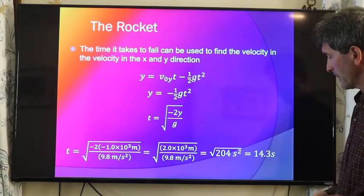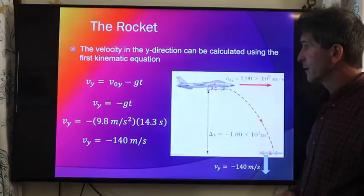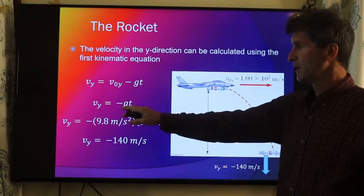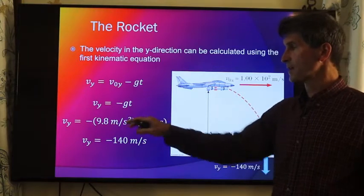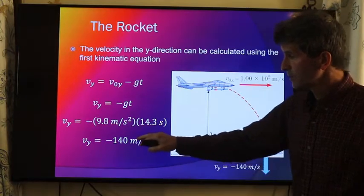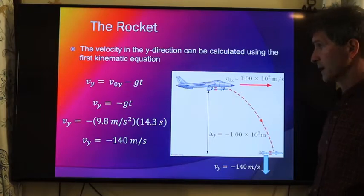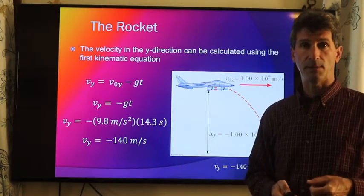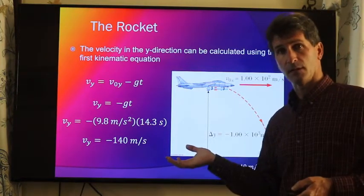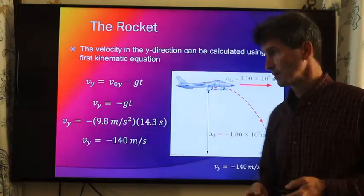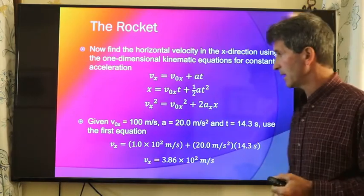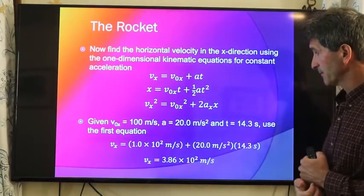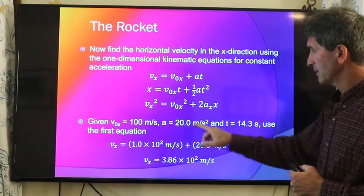So this rocket will be in its journey for 14.3 seconds. The speed at which it falls after that will be equal to V0Y, which is 0, minus GT — so just minus GT. Falling 14.3 seconds with acceleration of 9.8 meters per second squared, it's going to be falling at a rate of negative 140 meters per second. Now in the x direction it's also accelerating. The great thing about these problems is we can treat the x and y direction completely independently. Here are the equations for kinematic constant acceleration in the x direction, and it's accelerating in the x direction at 20 meters per second squared. Initially it's going at 100 meters per second.